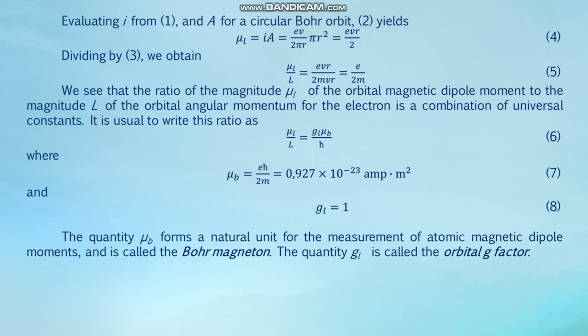We see that the ratio of the orbital magnetic dipole moment to the magnitude of the orbital angular momentum is a combination of universal constants. It is usual to write this ratio as μ_L / L = g_L · μ_B / ℏ, formula six, where μ_B = eℏ/(2m) = 9.274×10⁻²⁴ A·m², formula seven, and g_L = 1, formula eight. The quantity μ_B is called the Bohr magneton and is a natural unit for measuring atomic magnetic dipole moments. The quantity g_L is called the orbital g-factor.